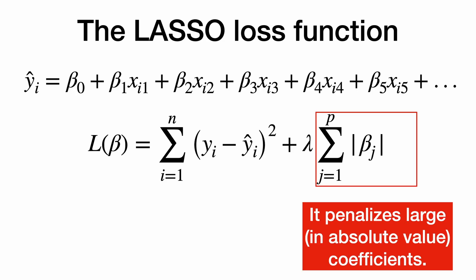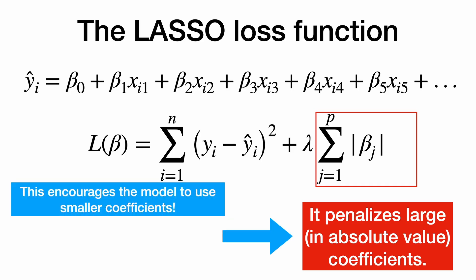And this whole function is a lot easier to optimize. We can usually do it through a simple algorithm called gradient descent. It penalizes large, in absolute value, coefficients. This encourages the model to use smaller coefficients. We call this shrinkage.